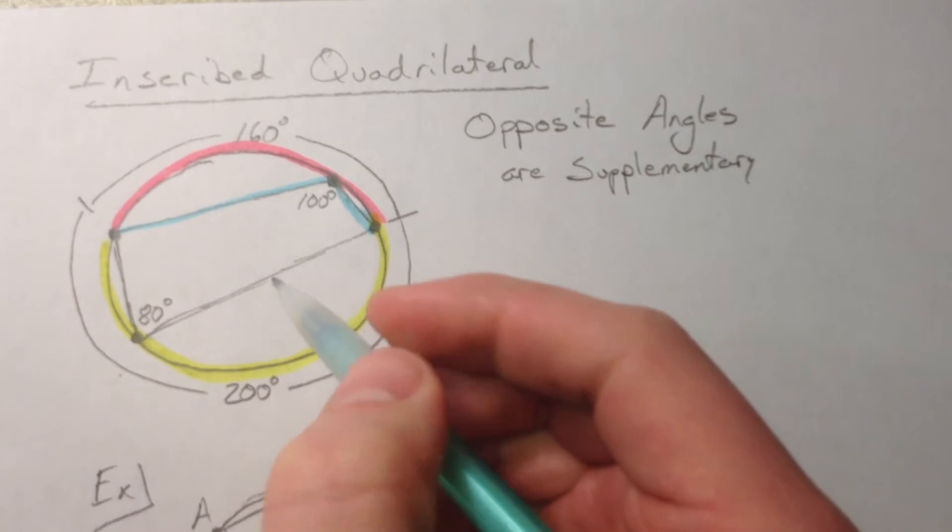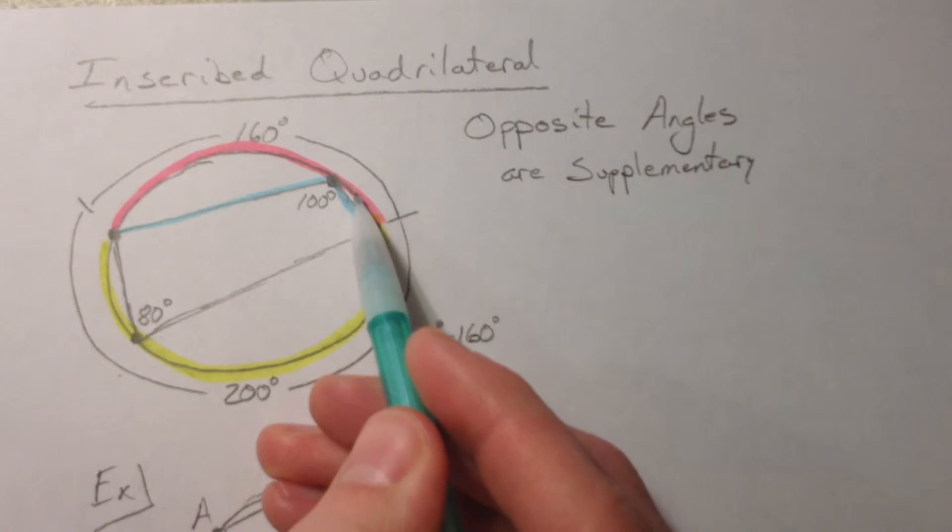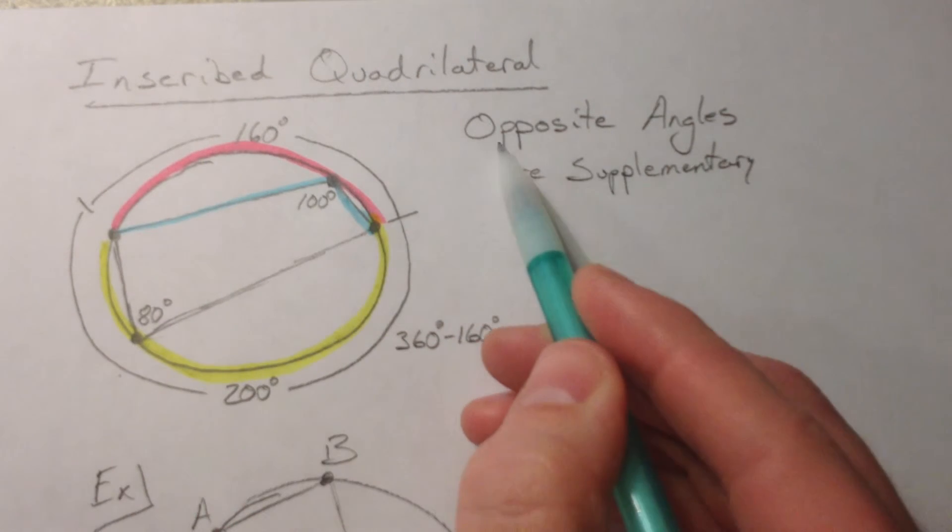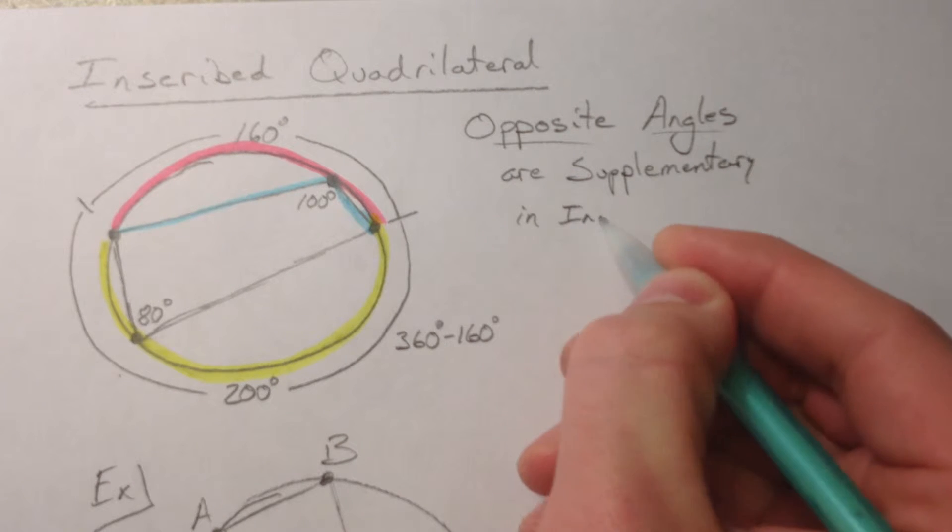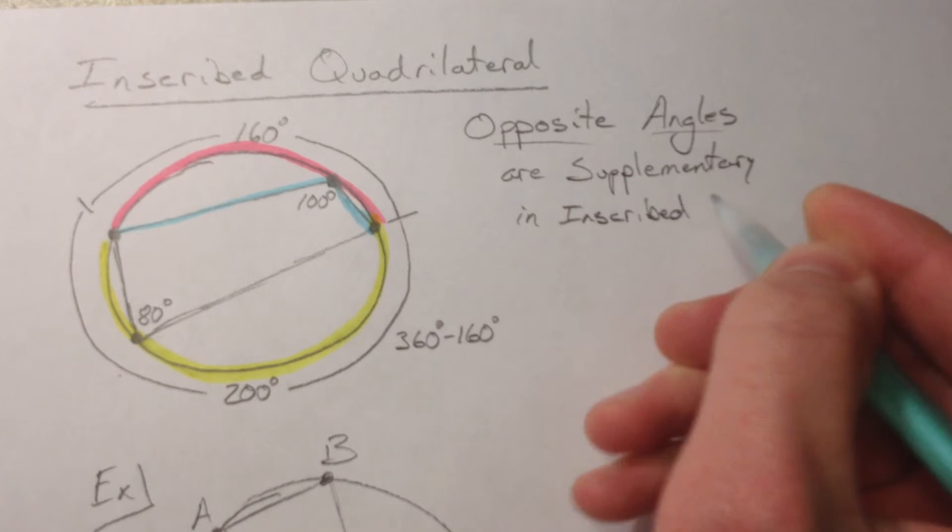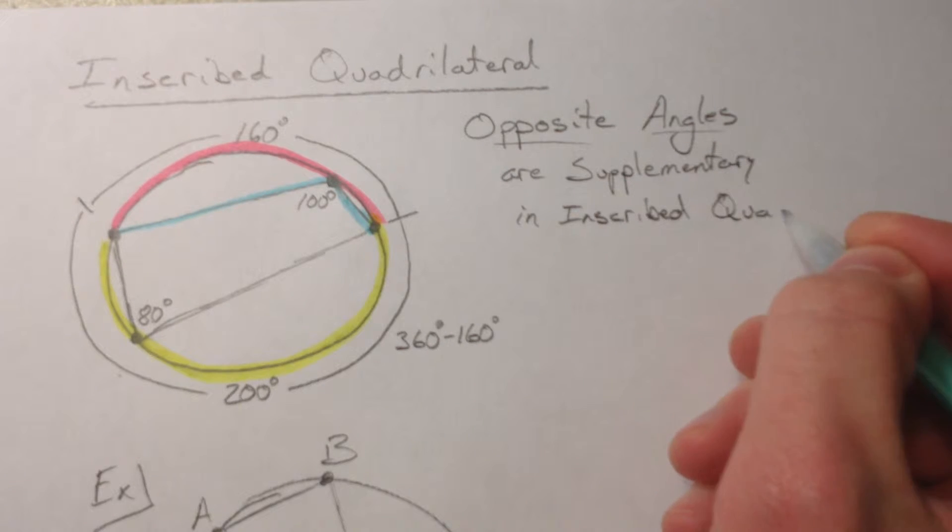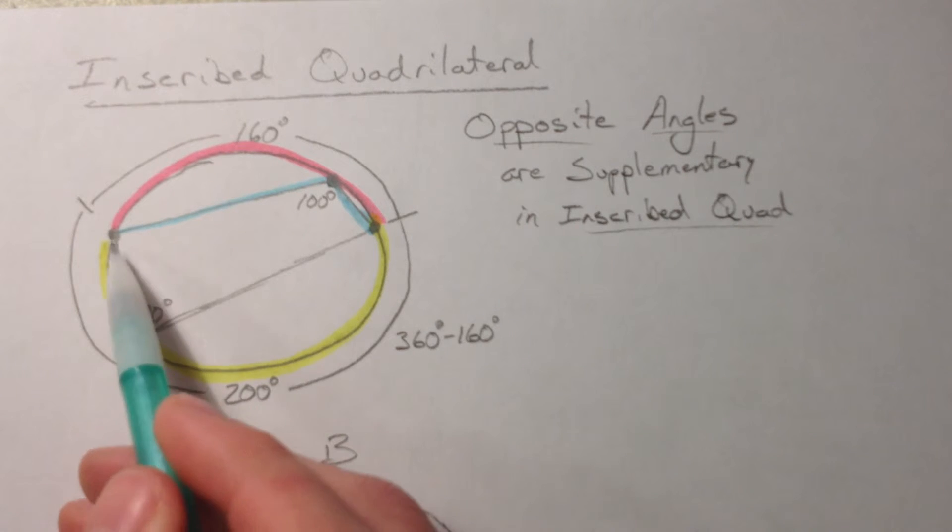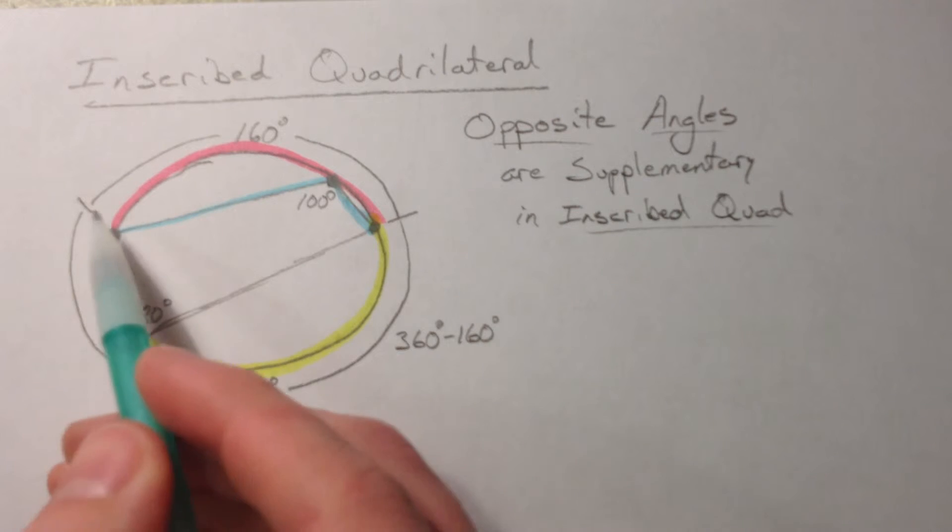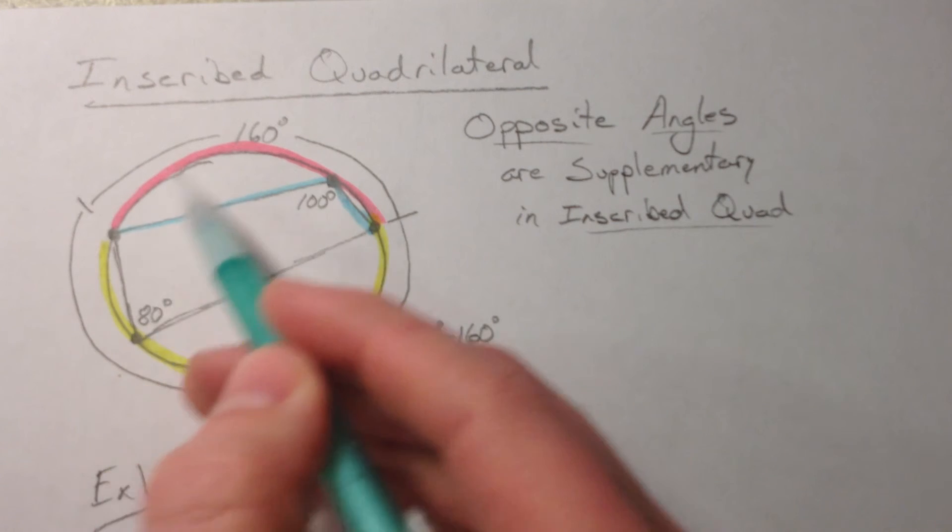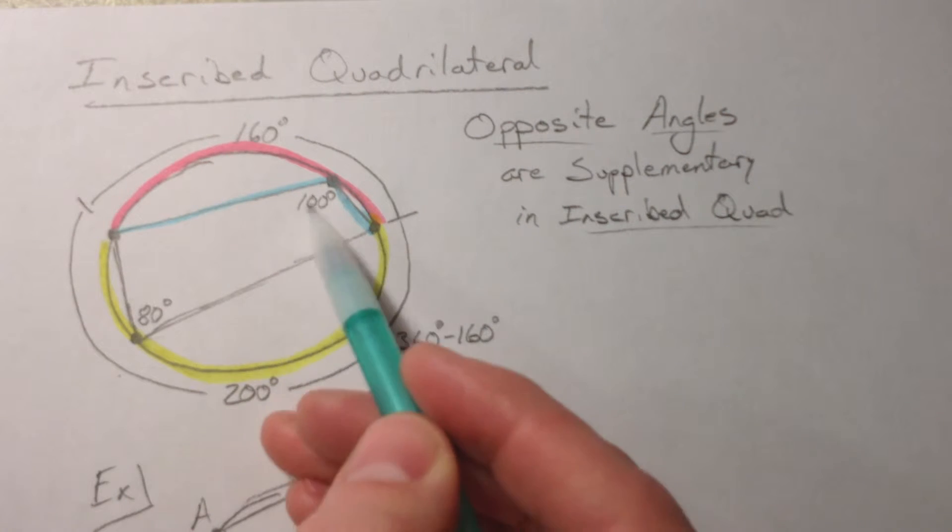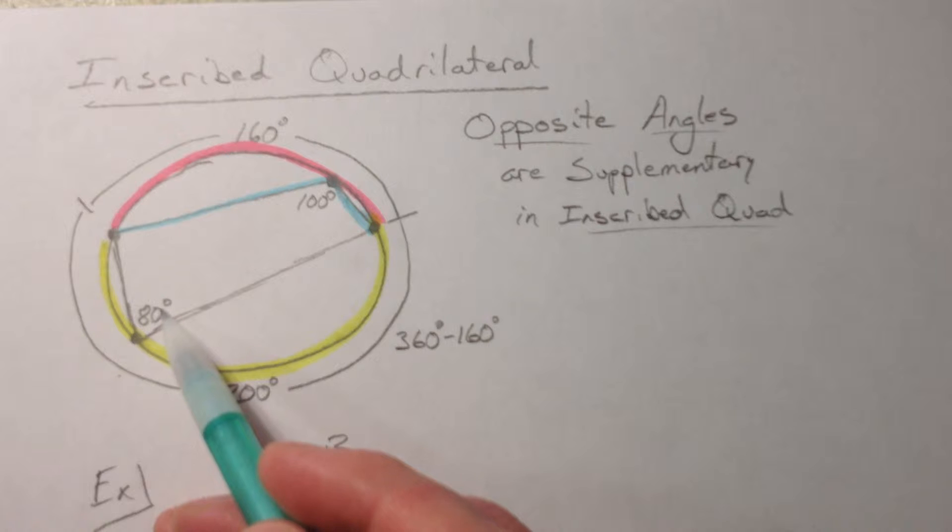going to be half of the intercepted arc. So if the arc is 200 this is going to be 100. So what I want you to notice is that if this is 80 and this is 100, opposite angles are supplementary in inscribed quadrilaterals. It's pretty easy to prove because if this is 100, this is always going to be twice, then you're going to have the leftovers and that's going to be half. So if the two arcs add up to 360 every single time, the two inscribed angles are always going to be half of that, so they'll add up to 180.